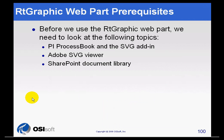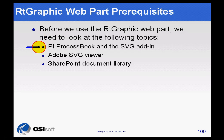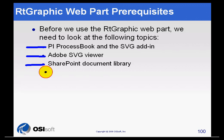That is not going to help you much if you don't understand some of these terms, so let's go over the prerequisites. We need to understand what PI Process Book is in the first place, and also what the Adobe SVG Viewer is. We will also talk about SharePoint Document Library.